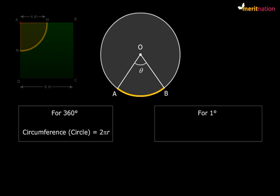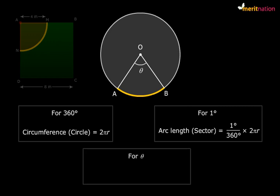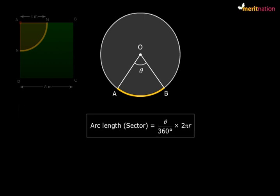That would be 1/360° × 2πr. So if the angle is theta, then the arc length of the sector would be θ/360° × 2πr. This is our formula. Length of an arc of a sector of angle theta equals θ/360° × 2πr.